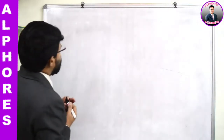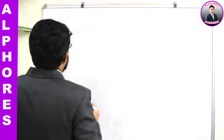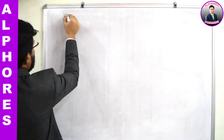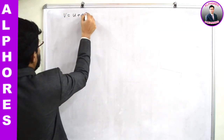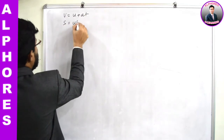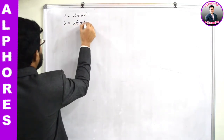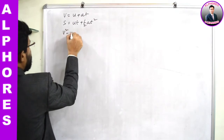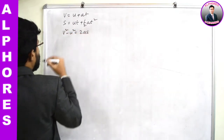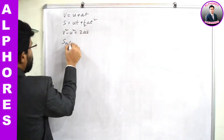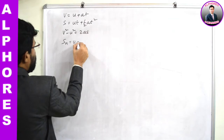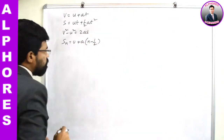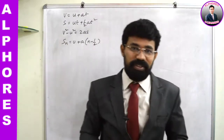What are the kinematic equations that we have derived in the previous sessions? These are the kinematic equations: v = u + at; s = ut + ½at²; v² - u² = 2as; Sn = u + a(n - ½). Mainly these are the four equations that we have discussed.